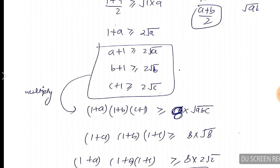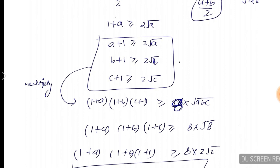You can rewind the video if the concept is not clear. Now multiply these three: (A+1) into (B+1) into (C+1).